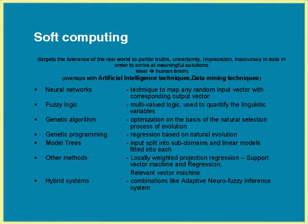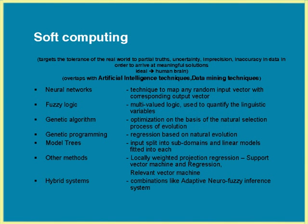The components of soft computing or AI include neural networks, fuzzy logic, genetic algorithm, genetic programming, model trees, various other methods, and hybrid systems. It is very difficult to give precise definitions of each because these are engineering terms. When we say neural networks, we mean a technique used to map any random input quantity with a corresponding random output quantity. Fuzzy logic is multi-valued logic — it goes beyond yes and no, and its major use is to quantify linguistic variables. For example, we say someone is thin, fat, or moderate in build — these linguistic variables are very difficult to quantify, but with fuzzy logic we do quantify them and incorporate them into our computational procedures.